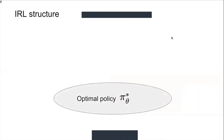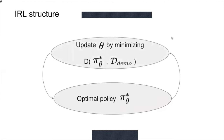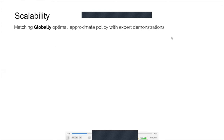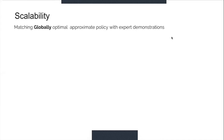Classic IRL algorithms consist of two loops. The inner loop approximates the optimal control policy for a hypothesized cost function theta, while the outer loop updates the cost function theta by minimizing a distance measure between the approximate policy and the expert demonstrations. The inner loop solves the forward reinforcement learning, or the optimal control problem, which is in itself a challenge for large and complex systems. Many interesting ideas have been proposed for IRL, but they all try to match a globally optimal policy with the expert demonstration over the entire system state space, or a sample approximation of it.